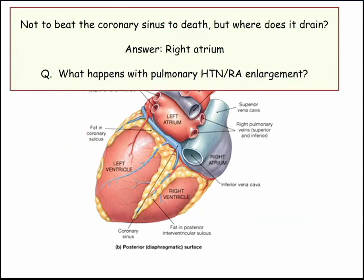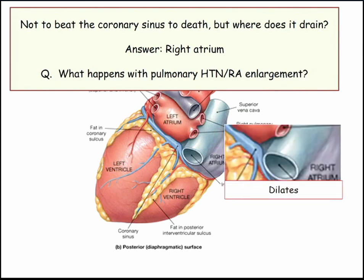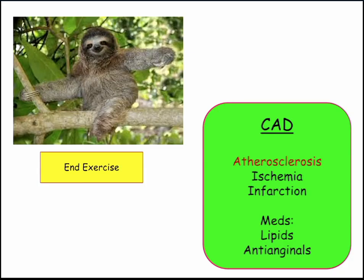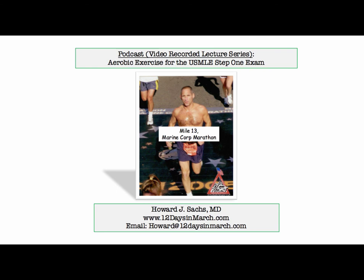The difference between the aorta and the coronary sinus should be a greater difference — it's extracting more oxygen and is more efficient at it. The coronary sinus drains into the right atrium, so with pulmonary hypertension or right atrial enlargement, the coronary sinus dilates. That concludes this discussion of aerobic exercise for the USMLE Step 1 exam. If you have any questions or concerns, please email me at 12 Days in March. Thank you.